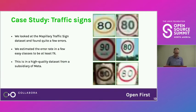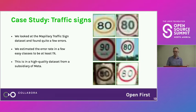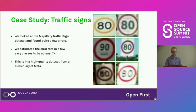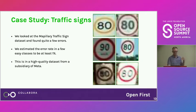Let's go back to traffic signs, which are an interesting case study. We looked at the Mapillary traffic sign dataset — a high-quality dataset released by Mapillary, currently a subsidiary of Meta. They put a lot of work into making it good. We estimated the error rate from three easy classes like speed limits at at least 1%.